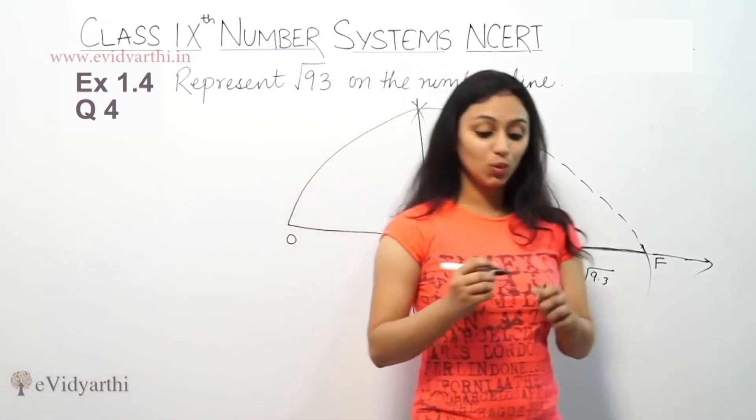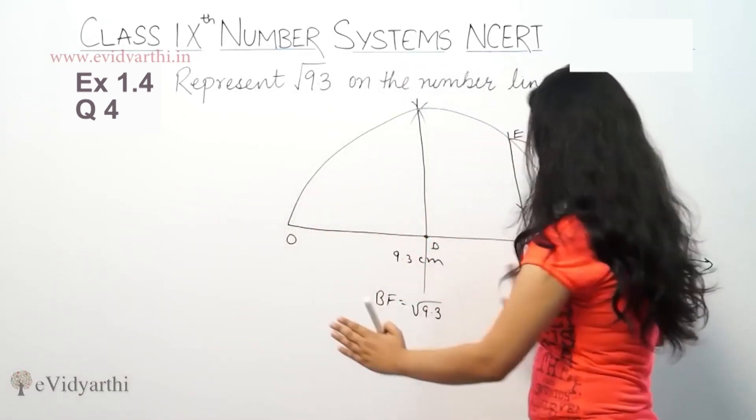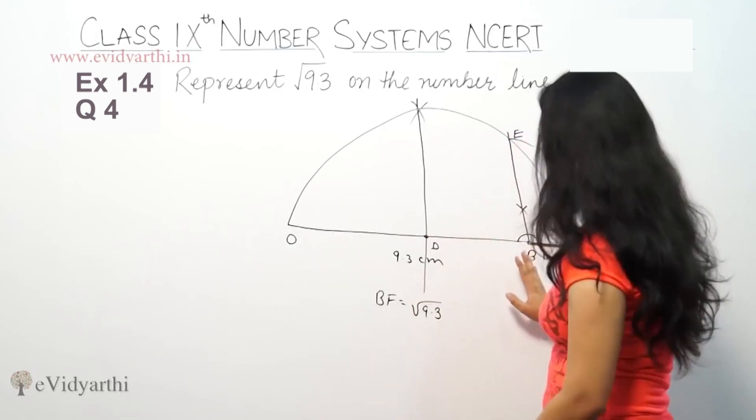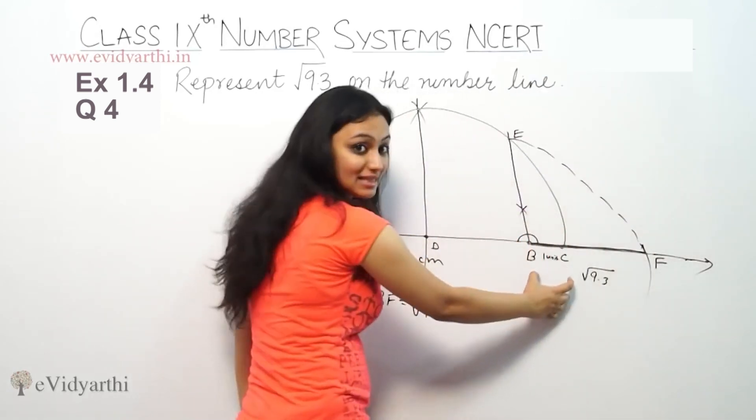Its plotting can also be done on the number line. First, you drew a line segment OB as 9.3. After that, you drew 1 unit extra BC.